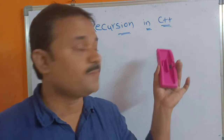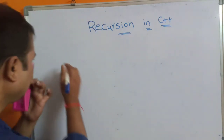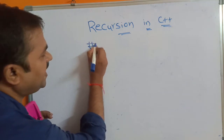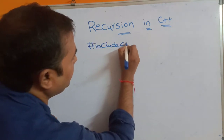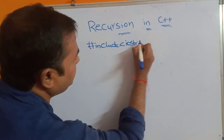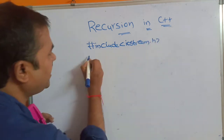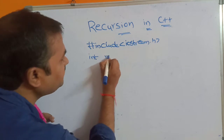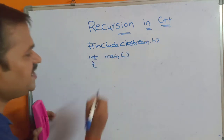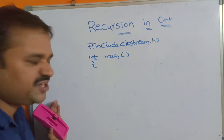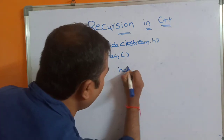Let us see a sample program in order to demonstrate recursion. First, hash include iostream.h, because cout and cin objects are present in iostream.h. int main — if the program is successfully compiled and executed, the main function returns zero value. Next let us call a function called 'high'.